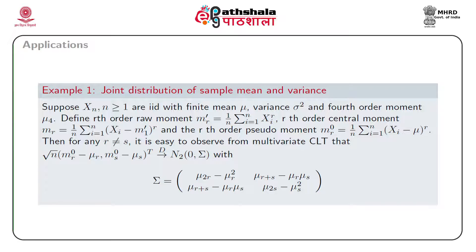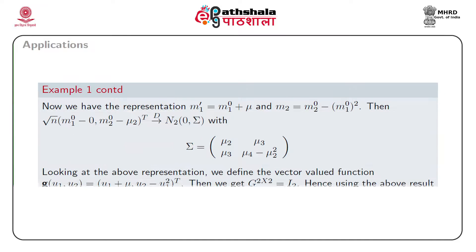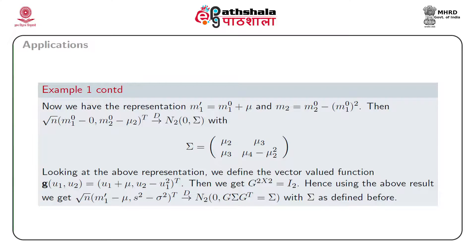This follows from the fact that x_i's being iid means (x_i - mu)^r are also iid, and the covariance between (x_i - mu)^r and (x_i - mu)^s is mu_{r+s} - mu_r*mu_s. The variance of m_r^0 is (1/n) times the variance of (x_1 - mu)^r, which equals mu_{2r} - mu_r^2. We have the representations m'_1 = m_1^0 + mu and m_2 = m_2^0 - (m_1^0)^2. Thus the large sample distribution of m_1^0 and m_2^0 is bivariate normal with mean 0 and dispersion matrix sigma having elements mu_2, mu_3 in the first row and mu_3, mu_4 - mu_2^2 in the second row.